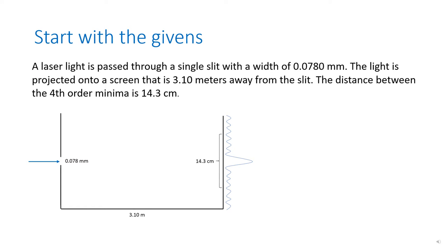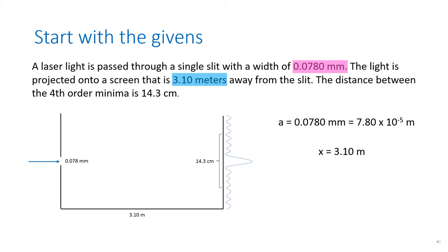The first thing we should always do when solving a problem like this is to draw a picture and look at all the givens. We were told that the light passed through a slit that measures 0.0780 millimeters, so a is equal to 0.0780 millimeters, which is equal to 7.80 times 10 to the negative 5 meters. The screen is 3.10 meters away, so x equals 3.10 meters — no conversion needed as it is already in SI units. The distance between the fourth order minima is 14.3 centimeters, but we must remember that is twice the value of y. So the distance we are specifically concerned with is half of that value: 7.15 centimeters, or 7.15 times 10 to the negative 2 meters.